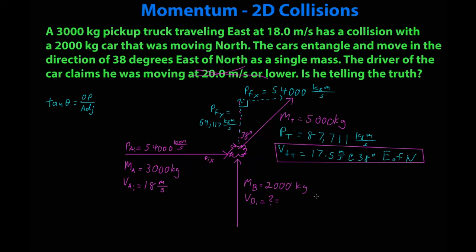But in the case of our problem, we actually still need to find out whether the person driving in the car was telling the truth or not. So let's find out. If momentum final y is this value, then momentum initial y, in other words momentum b initial, because it was the only object on the y-axis, must be 69,117 kg m/s. Since momentum is mass times velocity, I take his momentum divided by his mass, and I get a velocity of 34.6 meters per second. So he was not telling the truth.